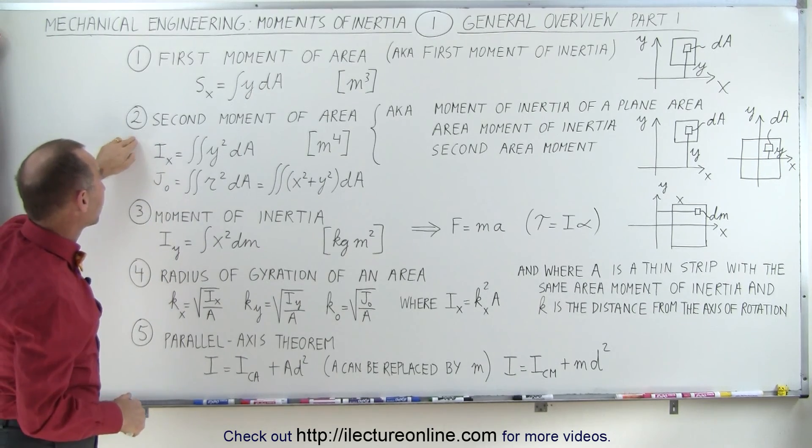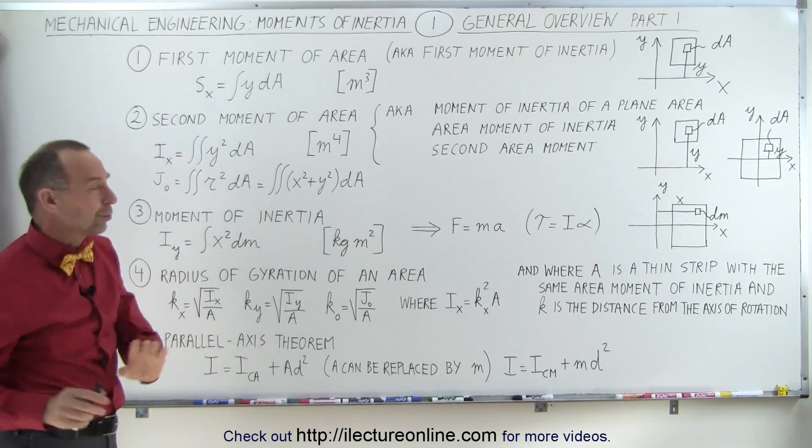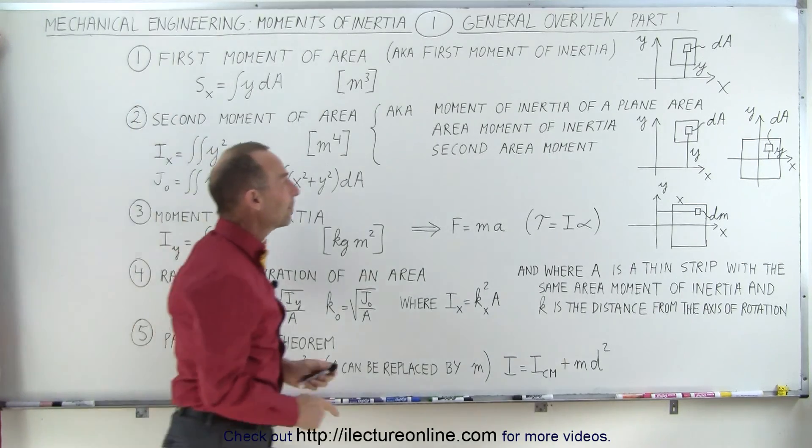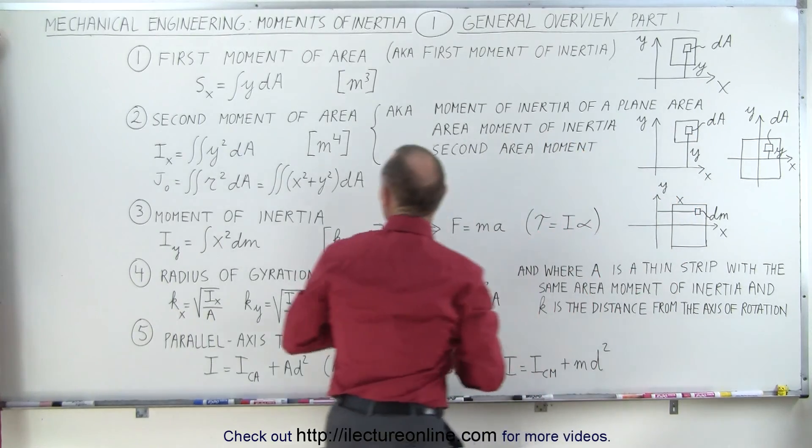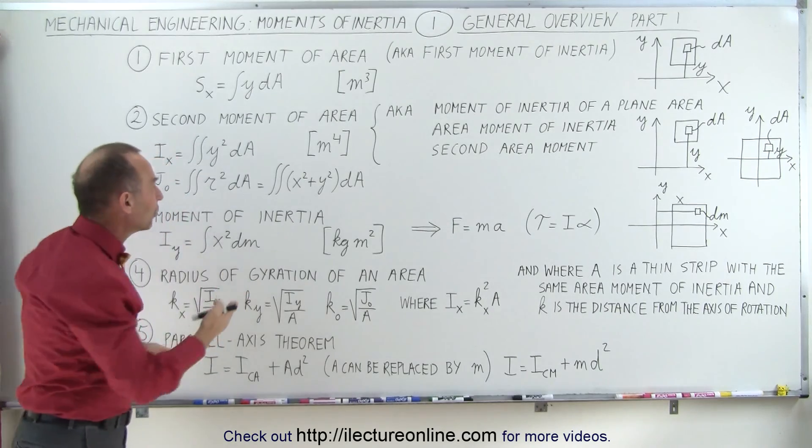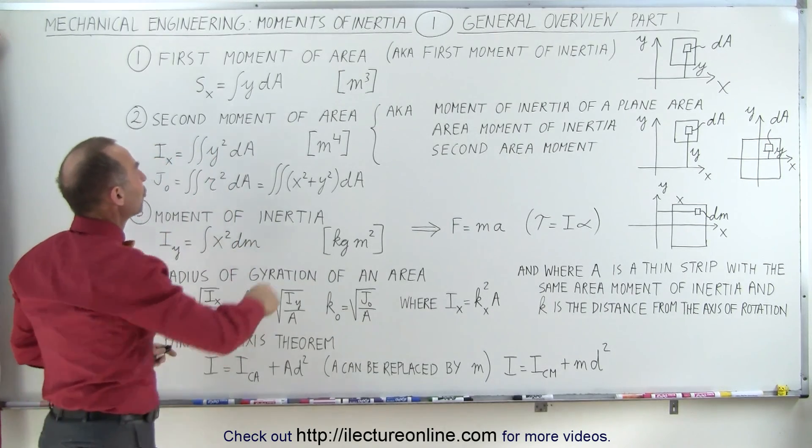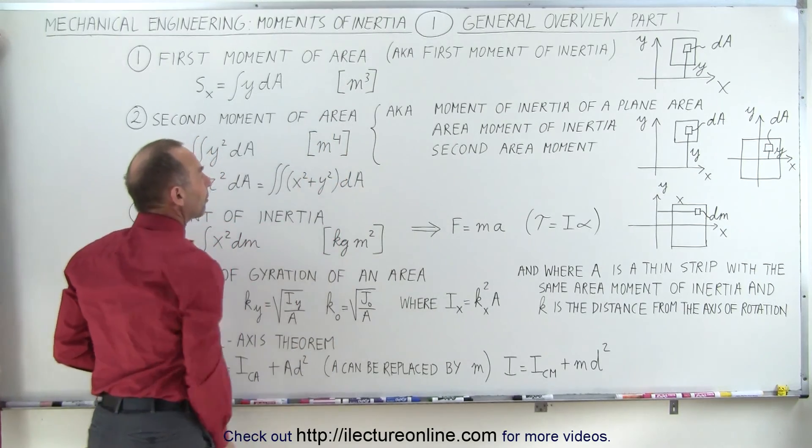The second item we're going to talk about is called the second moment of area. It's very similar to the first item here, except instead of taking the product of the distance times the area element, we take the product of the distance squared times the area element, and therefore typically we make that into a double integral. Notice the units here will be meters cubed; the units here will be meters to the fourth power.